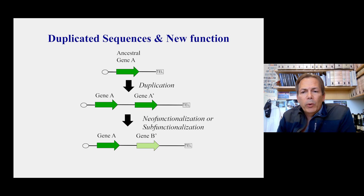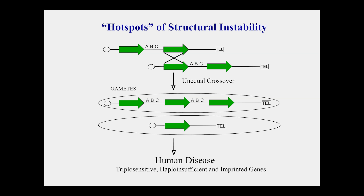Duplication is the primary force by which new genes evolve within species. The other aspect of duplicated sequences is that by virtue of their homology, they can drive genomic instability. Two chromosomes misalign during meiosis because of their high sequence identity; a recombination event occurs, leading to gametes — egg or sperm — that have acquired or lost a duplicated sequence.